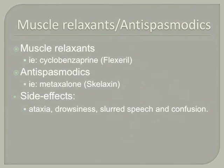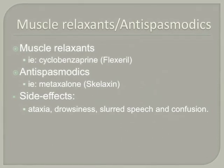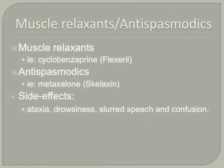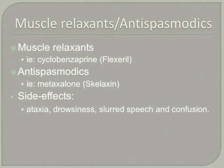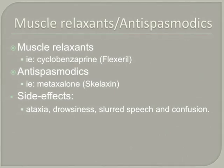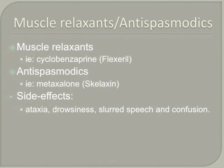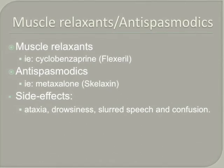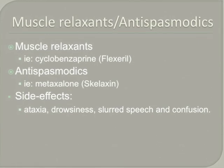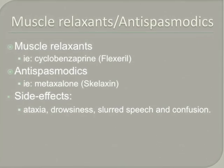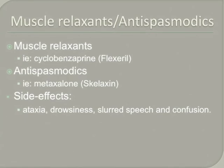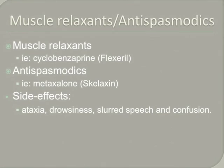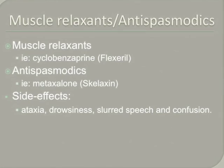Muscle relaxants and antispasmodics may be used for treatment of muscular disorders. These medications work with the central nervous system to inhibit the neurologic activity that causes the spasm. Any time we work with medications that affect the central nervous system we have to be leery of serious side effects. Common side effects are ataxia, which is involuntary muscle movement, drowsiness, slurred speech, and confusion. We need to teach our patients to take precautions not to fall or to drink alcohol with these medications.